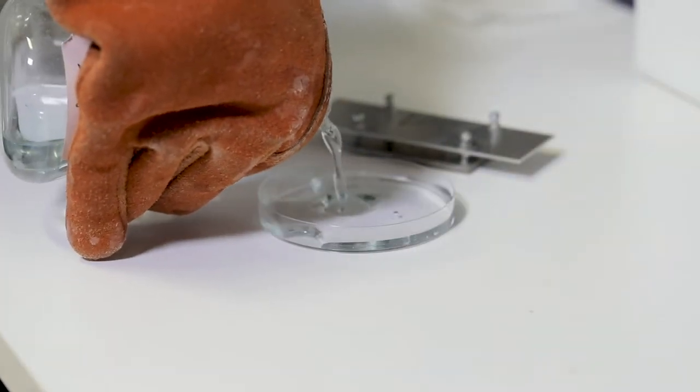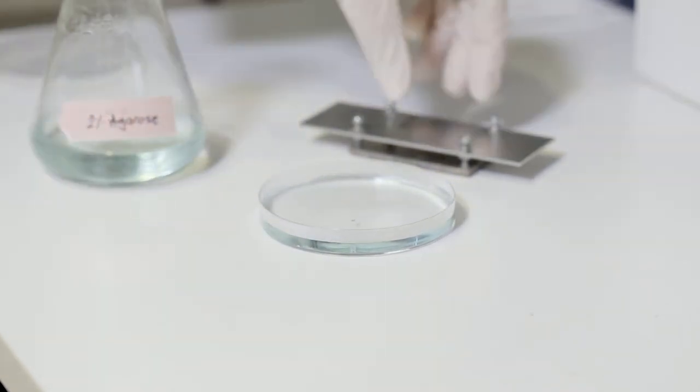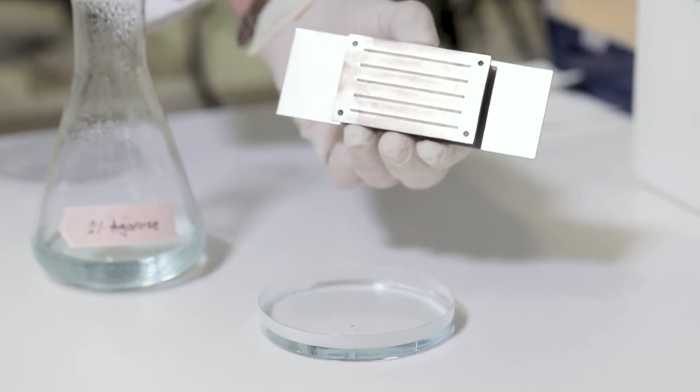We pour hot solution of agarose in the Petri dish and while it is still hot, we put metal or plastic V-shape mold on top, slowly from one side to another to avoid bubbles.